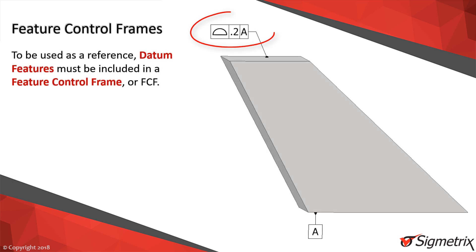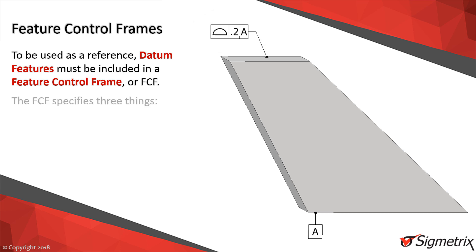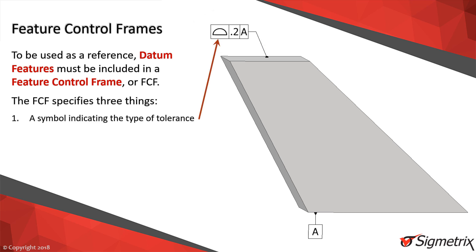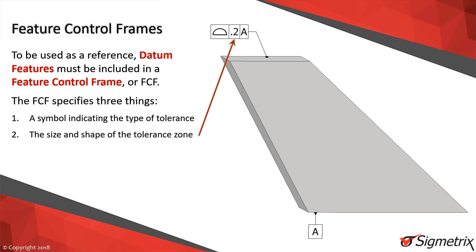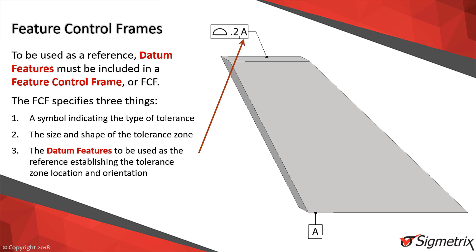To require the datum feature be used as a reference for inspection, it must appear in a feature control frame. The feature control frame consists of three sections: the type of tolerance being applied — in this case, profile of a surface; the size and shape of the tolerance zone; and the datum reference frame, or DRF. This particular callout says that datum A, as defined from datum feature A, should be used to establish the location and orientation of the tolerance zone described in the first two sections.